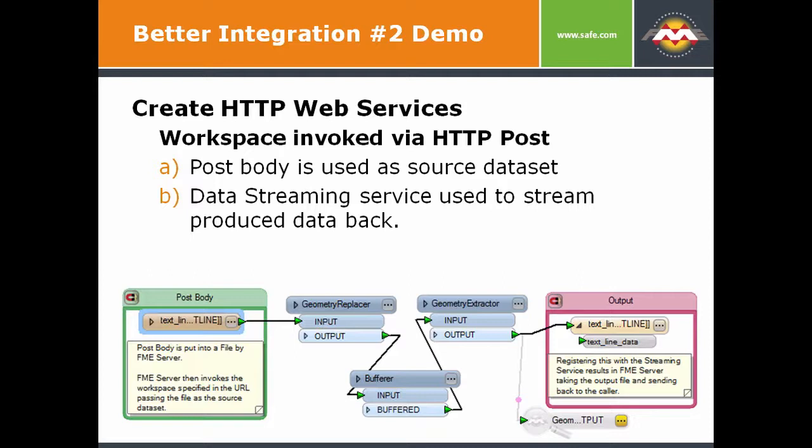We have a simple example on the slide to illustrate the point. In this case, the scenario is a user simply stores geometry as WKT — well-known text — and then posts that to the FME Server, invoking a workspace that does a buffer, and then streams it back. You can imagine a workflow where somebody has some geometry, posts it up, waits for the HTTP service to give the data back, and away they go. That's what we focused on: looking at common things users do and making it easy.